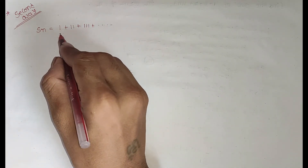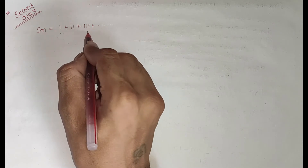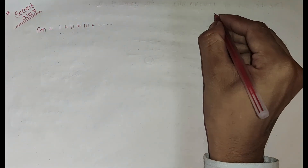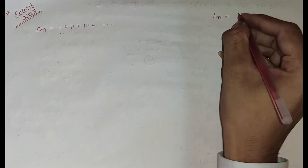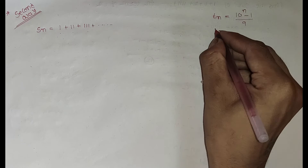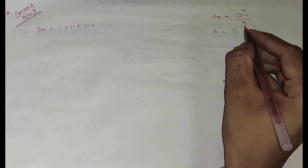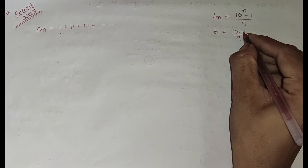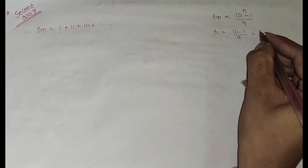Let's see the second method of the solution. Sn equals 1 plus 11 plus 111 plus so on, and the general term Tn equals (10^n minus 1) divided by 9. To verify: T1, put n equal to 1, gives (10 minus 1) divided by 9, which equals 9 divided by 9, which is 1. Correct.